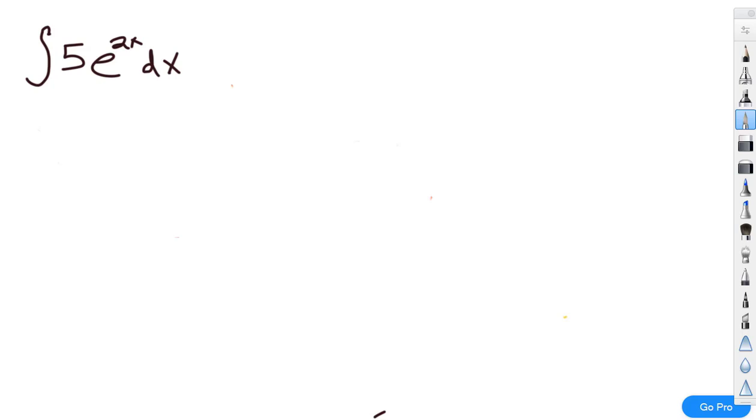Now what I need to do first is I need to figure out what is my inside function. So e to the 2x is probably not going to be my inside function. Let's see, what else could be... Oh, well usually I have e to the x, but here I have e to the 2x. So that 2x is probably going to be my inside function.